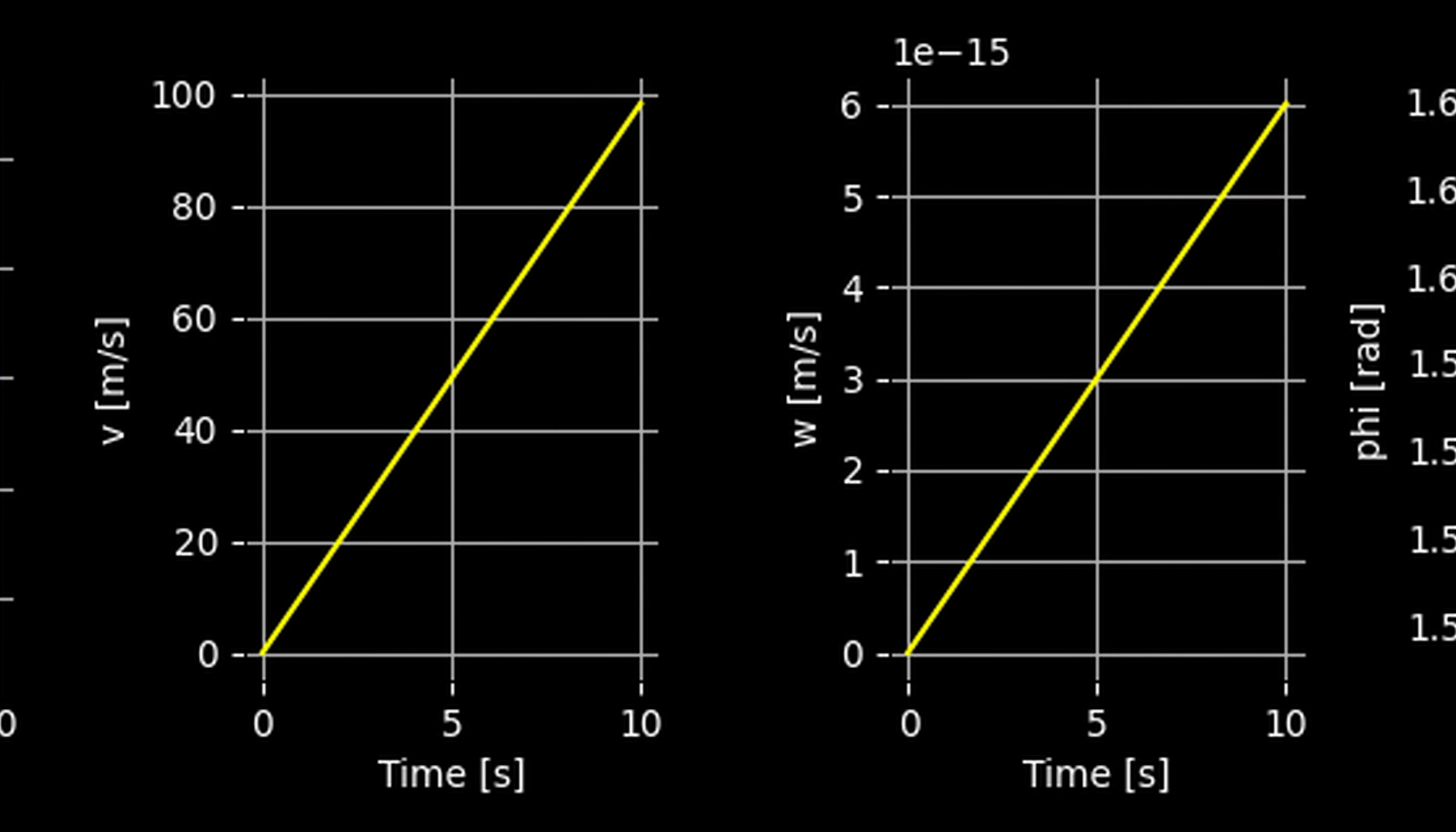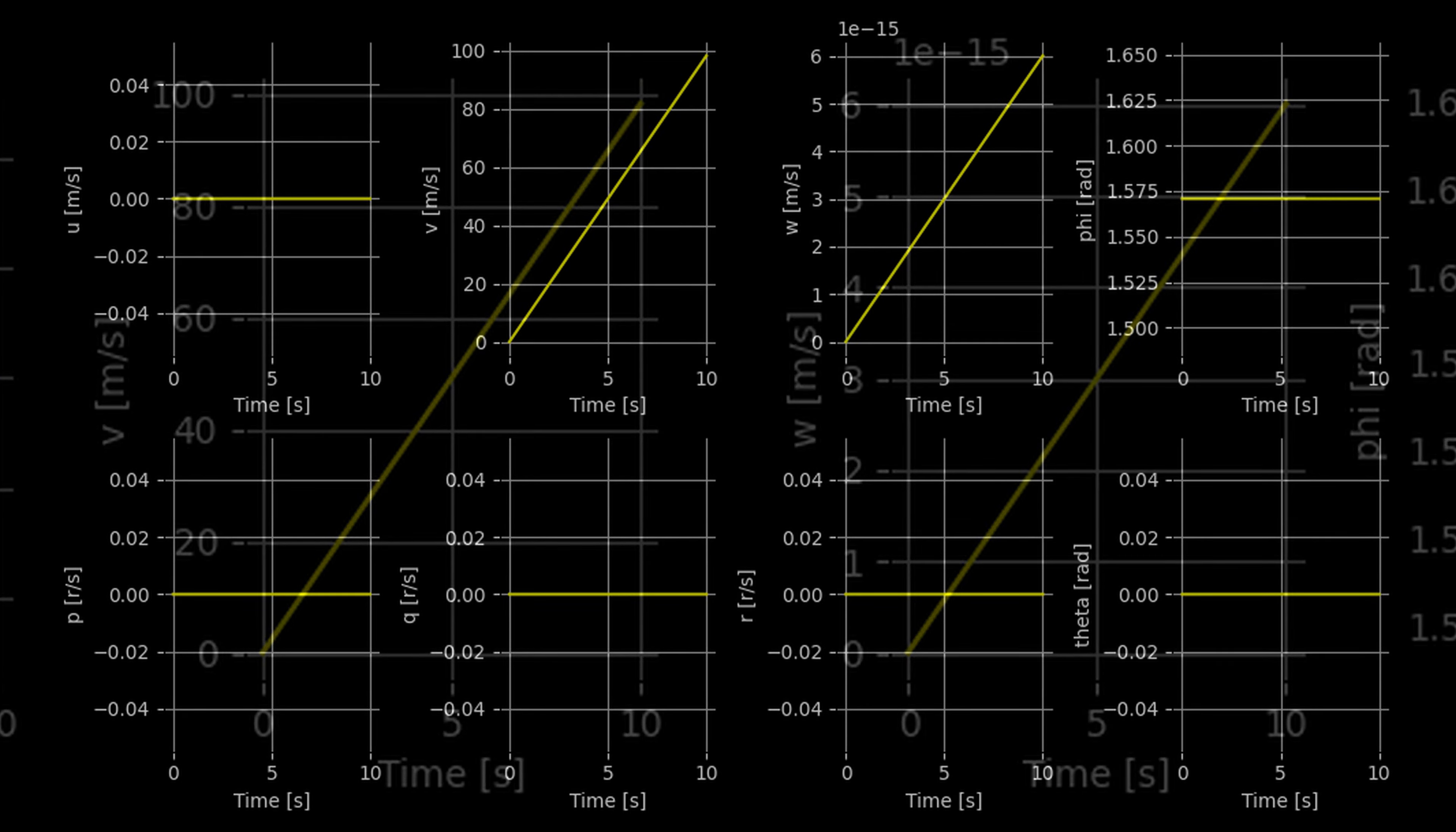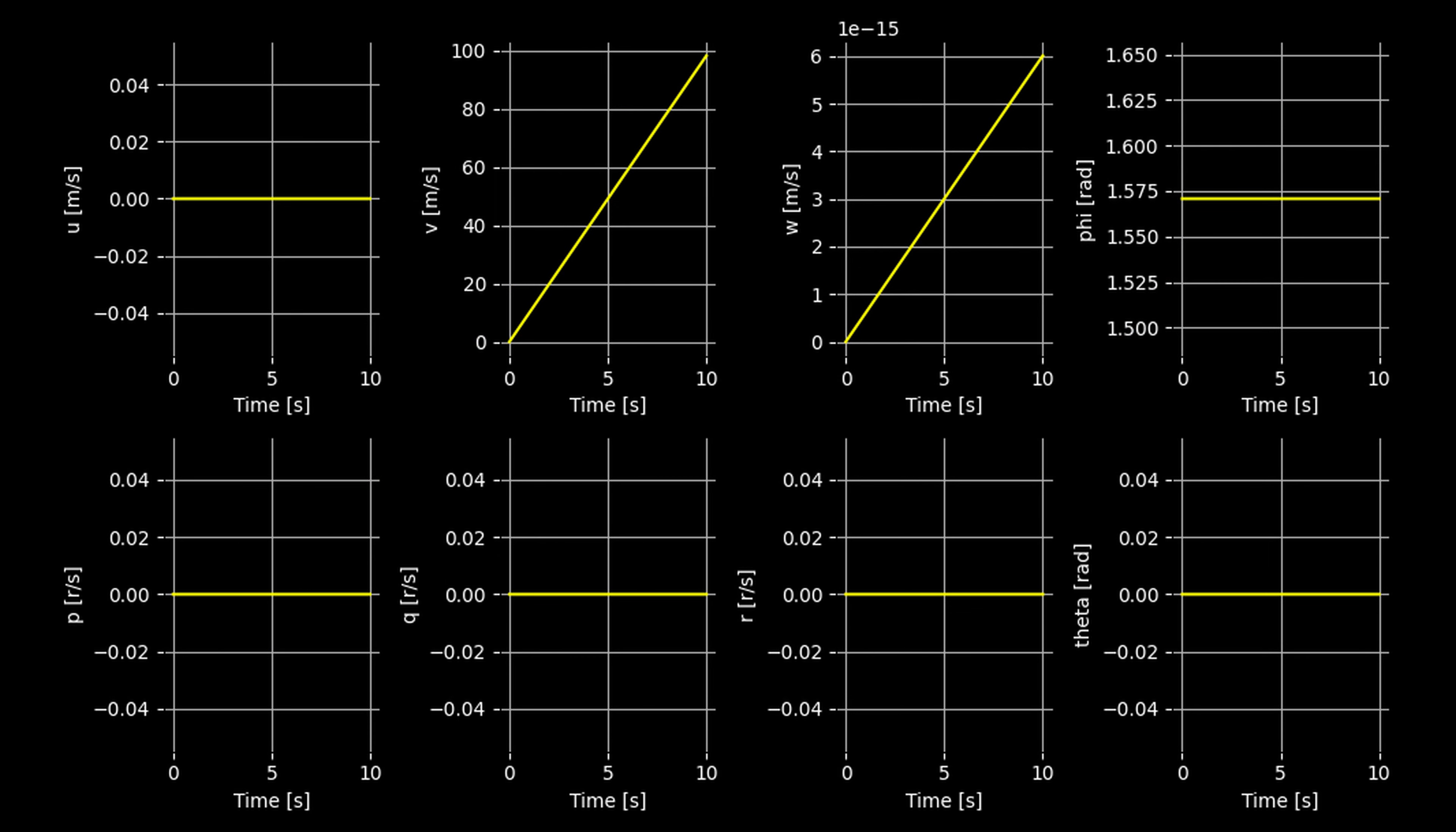As expected, we observe acceleration in the y-axis. At first glance, it may also seem like the sphere is accelerating in the z-axis, which of course should not happen, since the z-axis is now normal to gravity in this case. But more careful inspection shows the scale is 1e to the minus 15, essentially zero close to machine double precision. The roll angle remains a constant pi over 2, and all other signals show zero. The effect of the 90 degree roll rotation is completely consistent with our expectations.